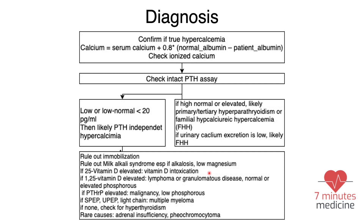It is also helpful to order a 25-vitamin D level — if elevated, this most likely represents vitamin D intoxication. A 1,25-vitamin D level should also be checked; if elevated, this is most likely lymphoma or granulomatous disease. To rule out malignancy, order a PTH-related peptide, and to rule out multiple myeloma, order serum and urine protein electrophoresis.